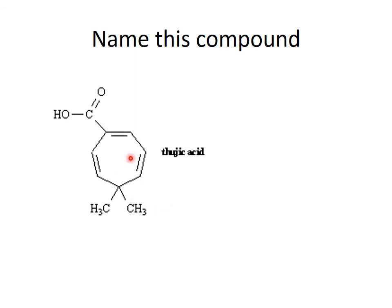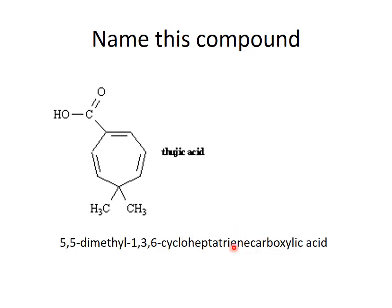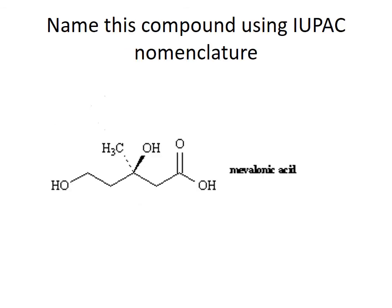Name this compound. There are seven carbons in the ring, so we're going to call it cycloheptatriene — cycloheptatriene. There's a carboxylic acid attached on the outside, so it's going to be cycloheptatrienecarboxylic acid. To name where the double bonds are, we number them 1, 2, 3, 4, 5, 6, and the methyls are on carbon 5. It is not necessary to say '1-carboxylic acid' because the carboxylic acid is always in the number one position.